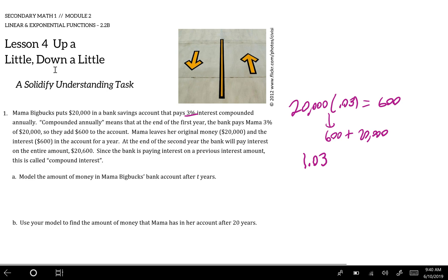So to model the amount of money in Mama Bigbucks' bank account after two years, I might use a recursive rule. In this case I'm going to use T for years because they asked me to, so F(T) or F sub T equals F sub T minus one times 1.03, F sub zero equals twenty thousand.